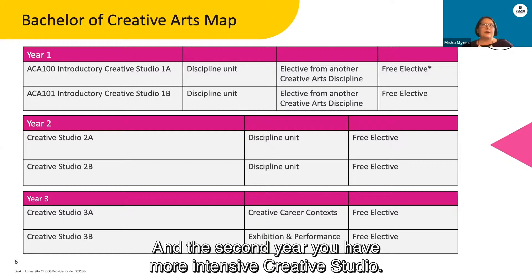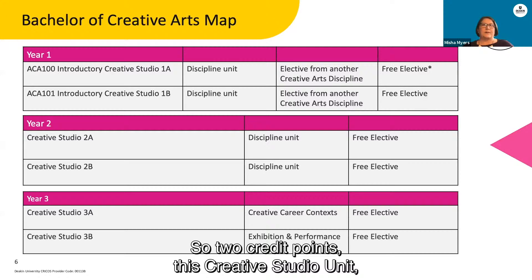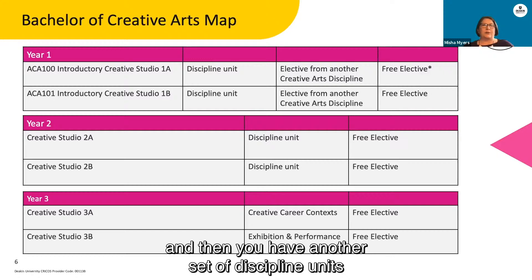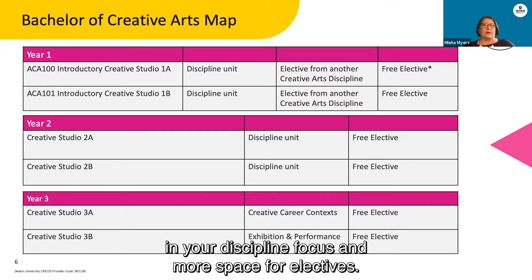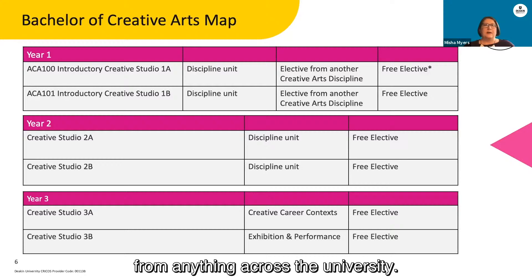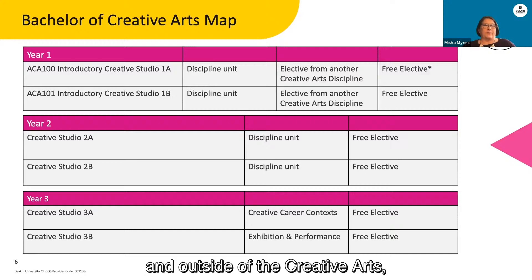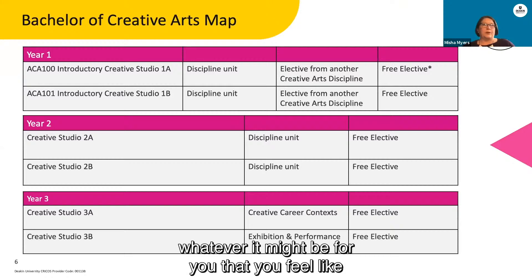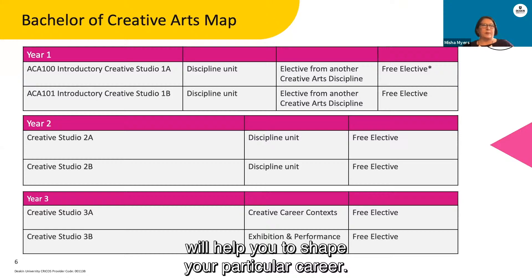In the second year, you have a more intensive creative studio — two credit points — and then another set of discipline units and more space for electives. Those electives can be taken from anything across the university. That's a place where you can really define your specific pathway, something that you're really interested in outside of the creative arts, but also things that complement it really well, like writing or film or design — whatever it might be for you that you feel will help shape your particular career.